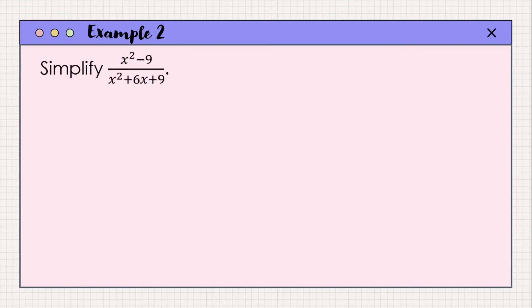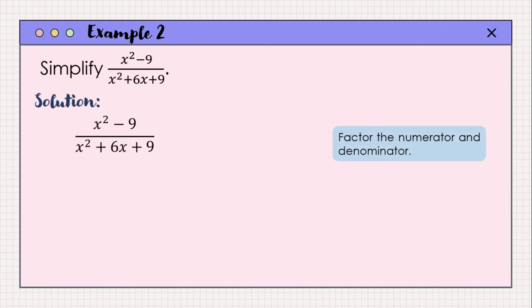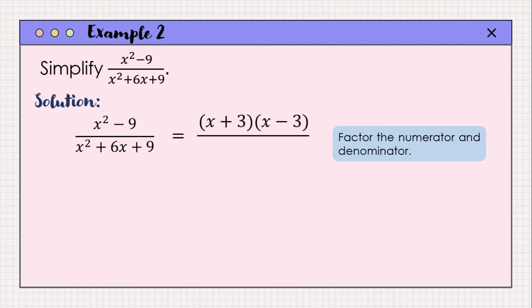Let us proceed with Example 2: simplify x squared minus 9 all over x squared plus 6x plus 9. First, we factor the numerator and denominator. The numerator is a difference of two squares. The difference of the squares of two terms is the product of the sum and difference of those terms. So the factored form of x squared minus 9 is written as quantity x plus 3 multiplied by quantity x minus 3, where x is the square root of x squared and 3 is the square root of 9.